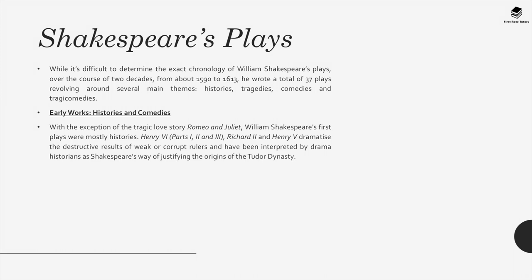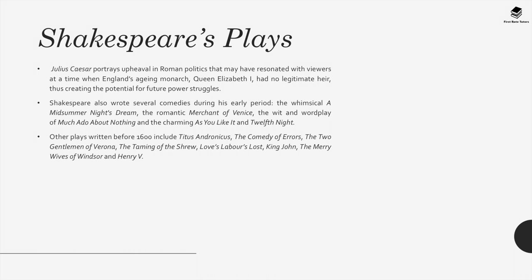With the exception of the tragic love story Romeo and Juliet, William Shakespeare's first plays were mostly histories. Henry VI parts 1, 2, and 3, Richard II, and Henry V dramatize the destructive results of weak or corrupt rulers and have been interpreted by drama historians as Shakespeare's way of justifying the origins of the Tudor dynasty. Julius Caesar portrays the upheaval in Roman politics that may have resonated with viewers at a time when England's aging monarch, Queen Elizabeth I, had no legitimate heir, creating the potential for future power struggles. Shakespeare also wrote several comedies during his early period: the whimsical A Midsummer Night's Dream, The Merchant of Venice, Much Ado About Nothing, As You Like It, and Twelfth Night. Other plays written before 1600 include Titus Andronicus, The Comedy of Errors, The Two Gentlemen of Verona, The Taming of the Shrew, Love's Labour's Lost, and King John.